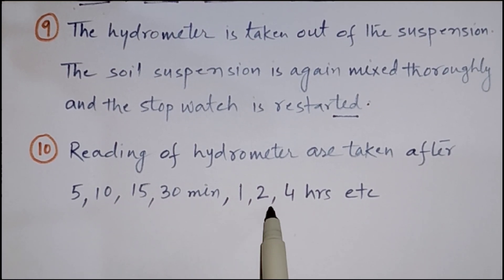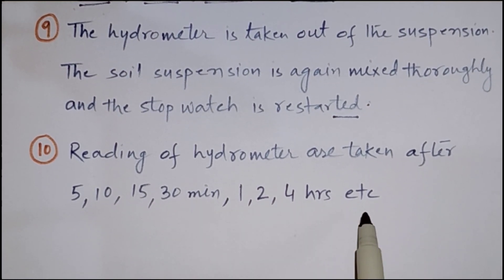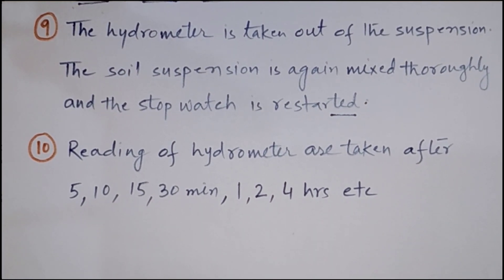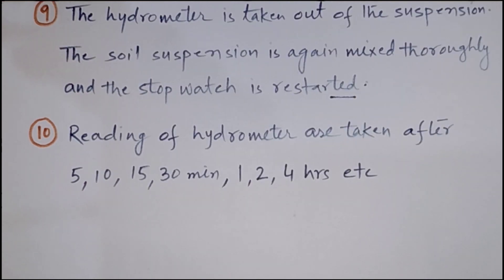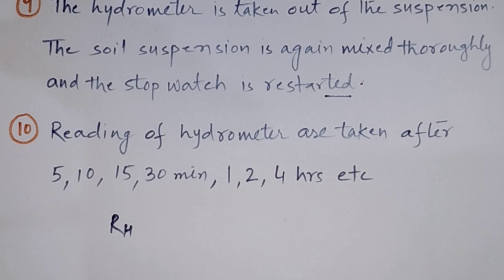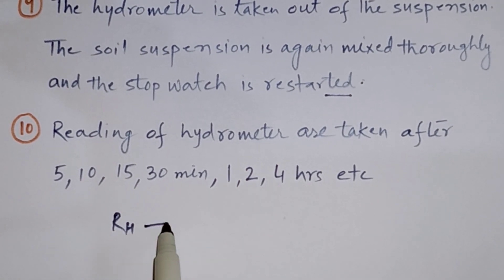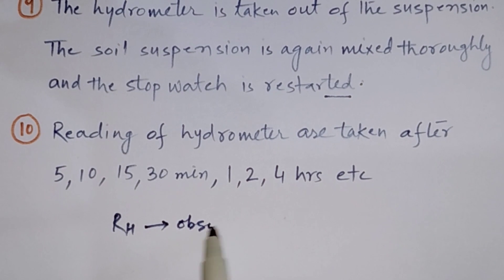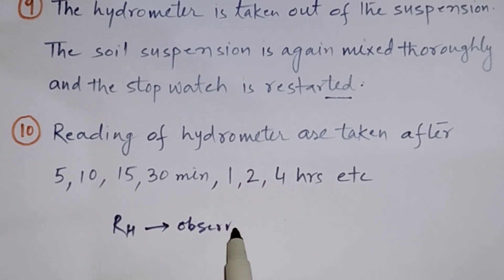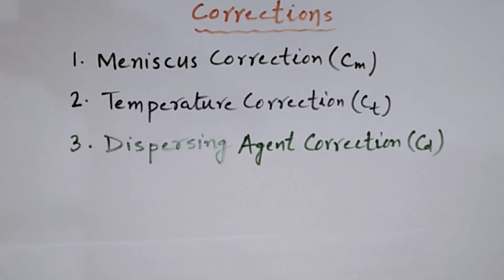Readings for the hydrometer are taken after 5, 10, 15, 30 minutes, 1, 2, and 4 hours, etc. The reading of the hydrometer is taken as Rh, which will be the observed hydrometer reading.